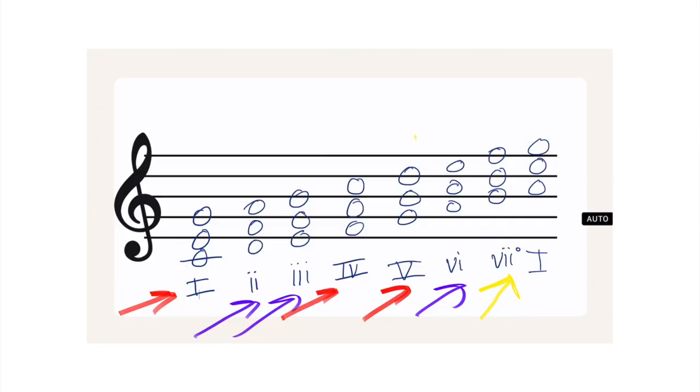You'll also notice that the seven chord has a small degree symbol, which means that chord is diminished. If you're unfamiliar with major, minor, diminished, and augmented triads, you can check out my video that explains those — I'll link that in the description below as well.